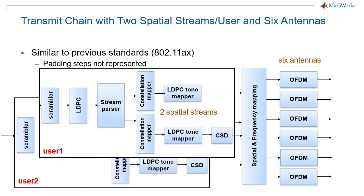This diagram summarizes the transmit chain for the data part of 802.11be packets. The view is identical to what we saw for 802.11ac and 802.11ax in earlier episodes. The main differences, which come from the fact that multiple resource units may be used, are not visible at this level. Of course, the constellation mapper now also supports 4096 QAM, and multi-link operation is not represented here.